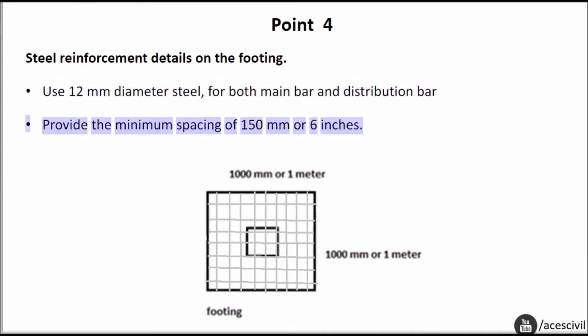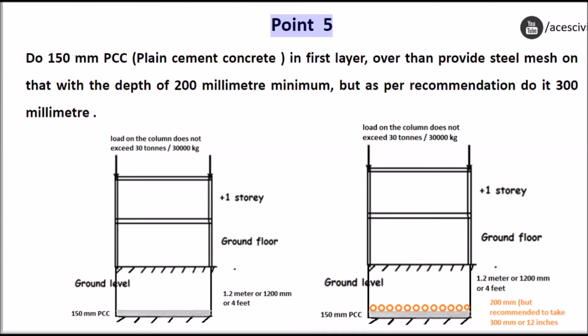Point five: do 150 millimeters PCC plain cement concrete in first layer, then provide steel mesh on that with the depth of 200 millimeter minimum, but as per recommendation do it 300 millimeter.